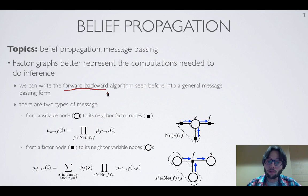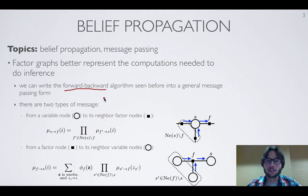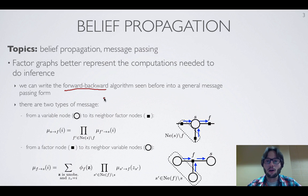Specifically, belief propagation is a message-passing algorithm where nodes in the graph exchange messages between them. Messages are exchanged until convergence — that is, until the messages one node sends to another no longer change. The message one node sends to another will be a combination of things from the factors associated with that node and messages received from its neighbors.